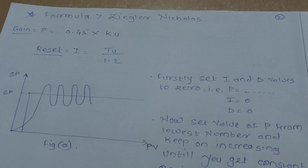Now we will see Ziegler-Nicholas equation where gain parameter P is equal to 0.45 into Ku, and reset parameter I is equal to Tu divided by 1.2. Now we have to find out the value of Ku and Tu.